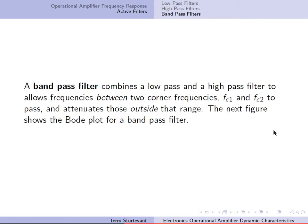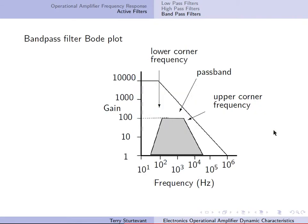A band-pass filter combines a low-pass and a high-pass filter to allow frequencies between two corner frequencies to pass, and attenuates those outside that range. The Bode plot for a band-pass filter shows a lower corner frequency, an upper corner frequency, and the pass band between them.